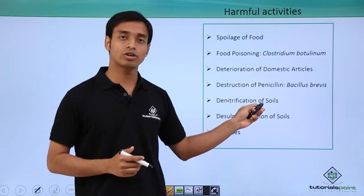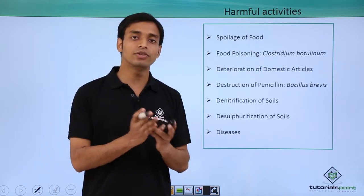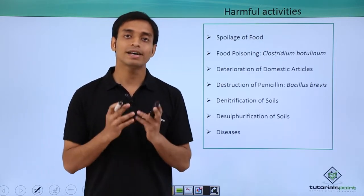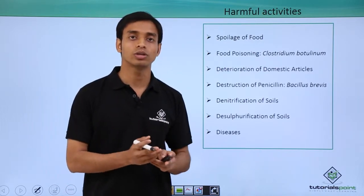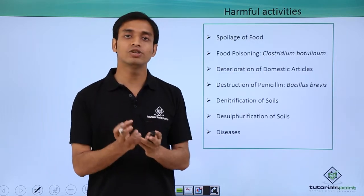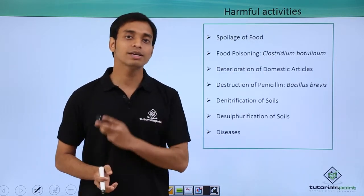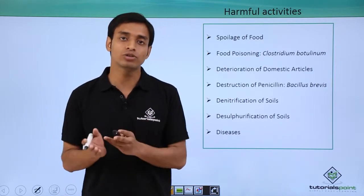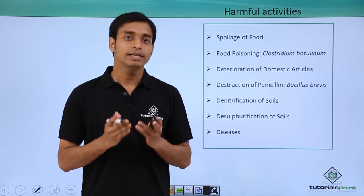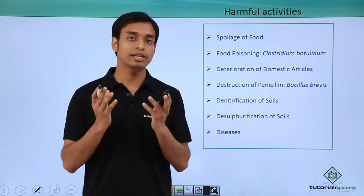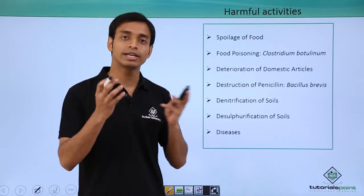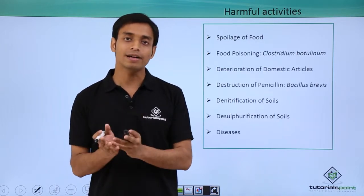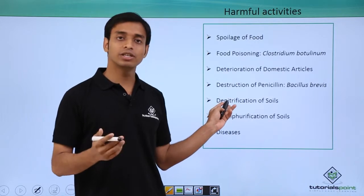Bacteria also cause denitrification of soil. Some bacteria convert nitrates into atmospheric gaseous nitrogen. Plants are unable to use gaseous nitrogen as a nitrogen source — it has to be converted back into nitrates. Bacteria like Rhizobium, present mostly in the root nodules of leguminous plants, help convert nitrogen to nitrates usable by plants. Due to lightning, gaseous nitrogen in the atmosphere also gets converted to nitrates, which come down to earth in the form of rain.